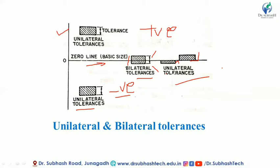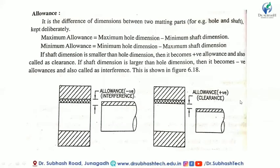If tolerance is provided on both sides of the basic dimension, that is bilateral tolerance. Next, we will discuss allowance.